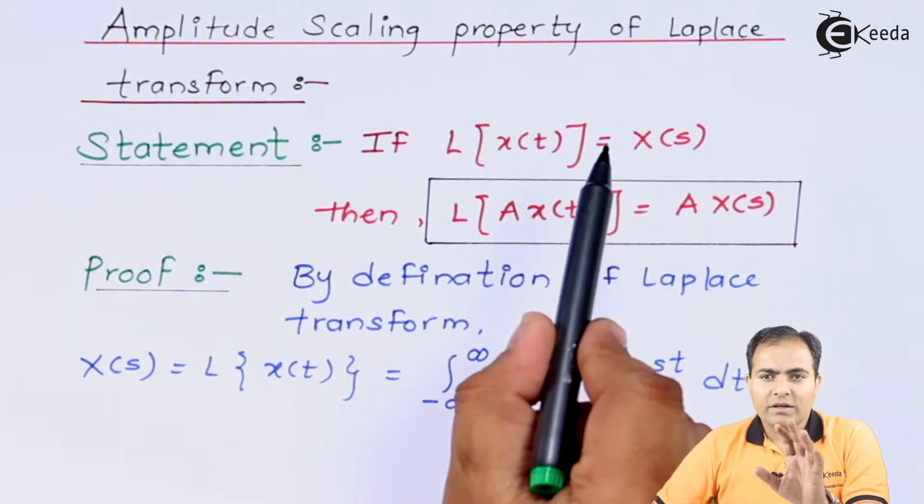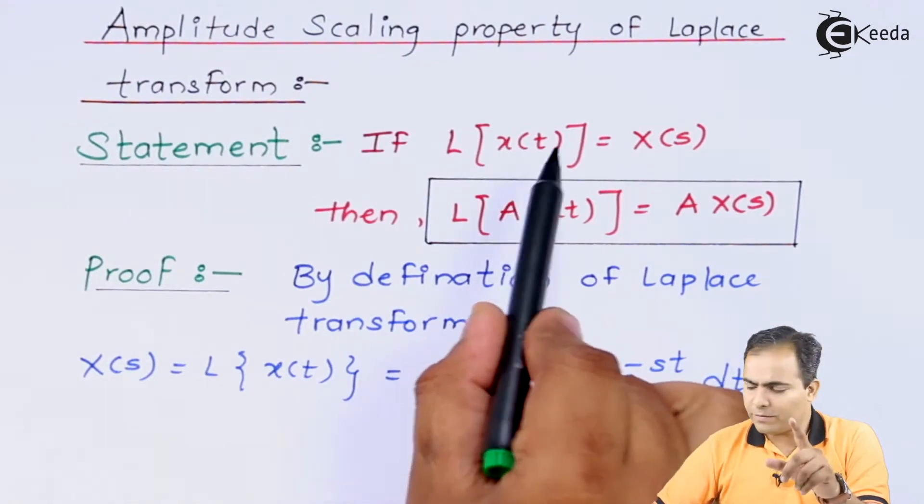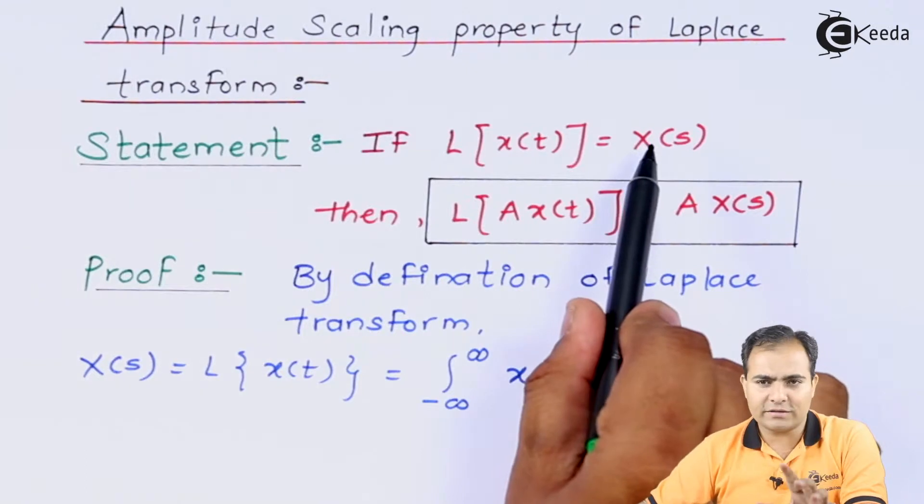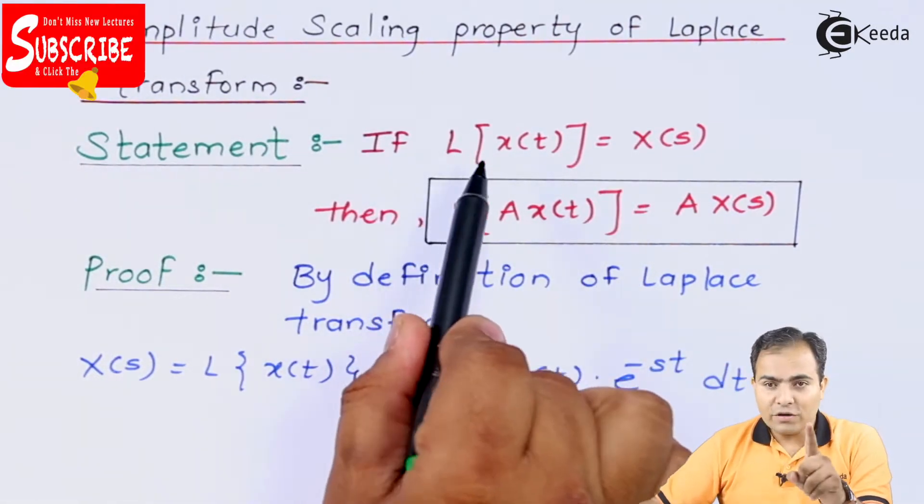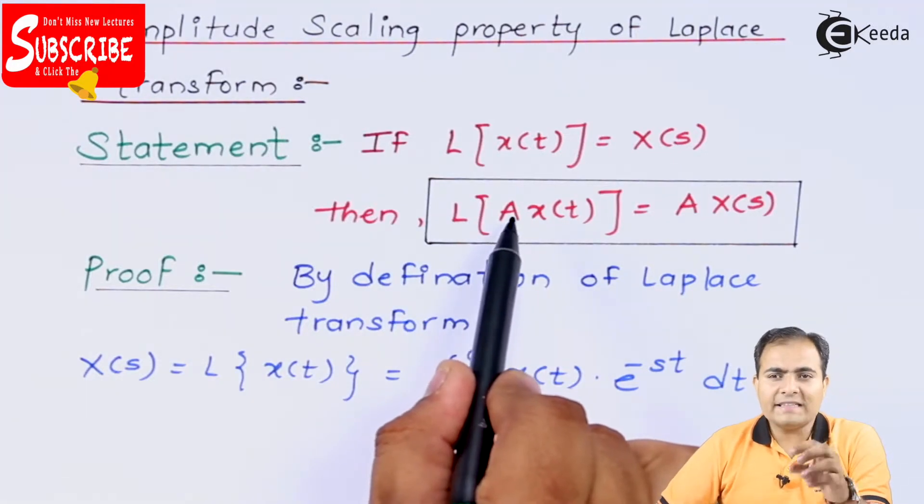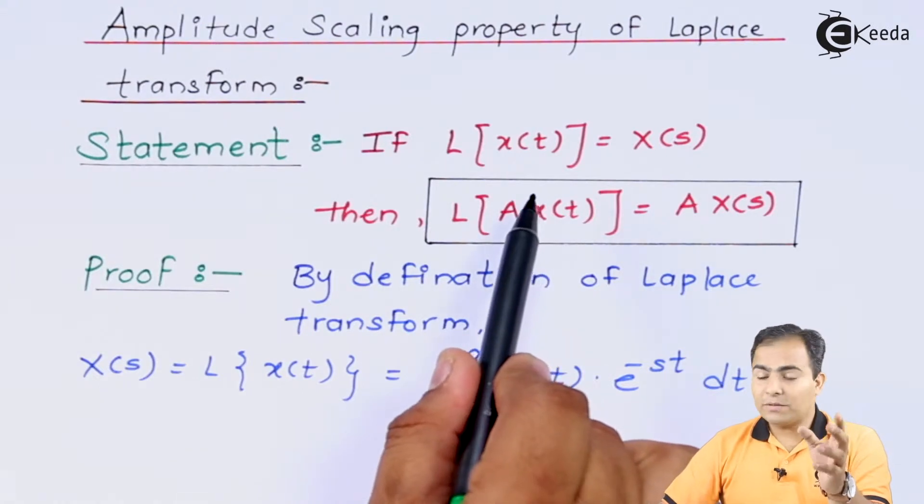Suppose if you have a function x of t, then we can transform this function into Laplace transform and we can write this answer as x of s. But suppose if this x of t is multiplied with some amplitude, let's say A. This A can be any integer value.